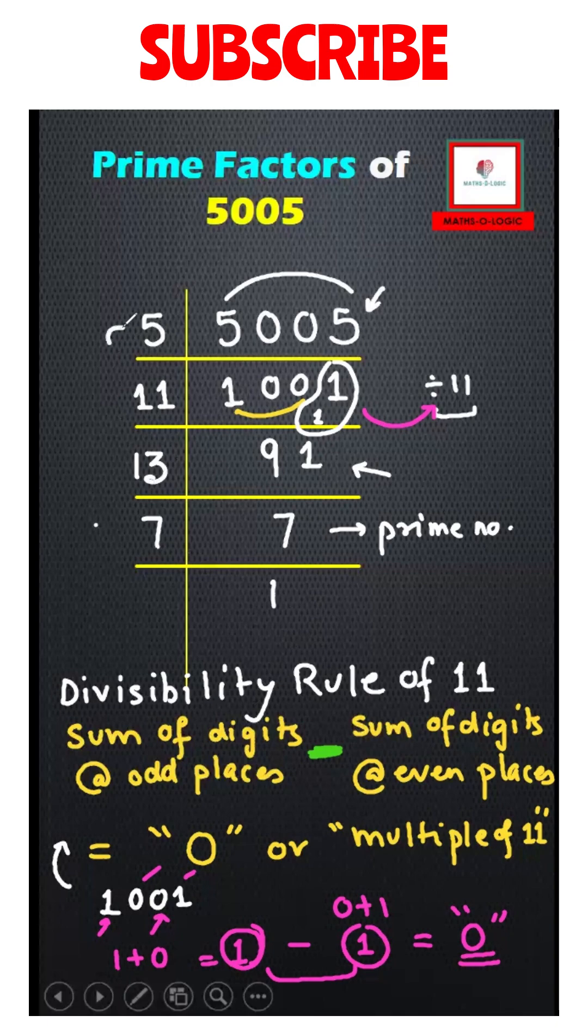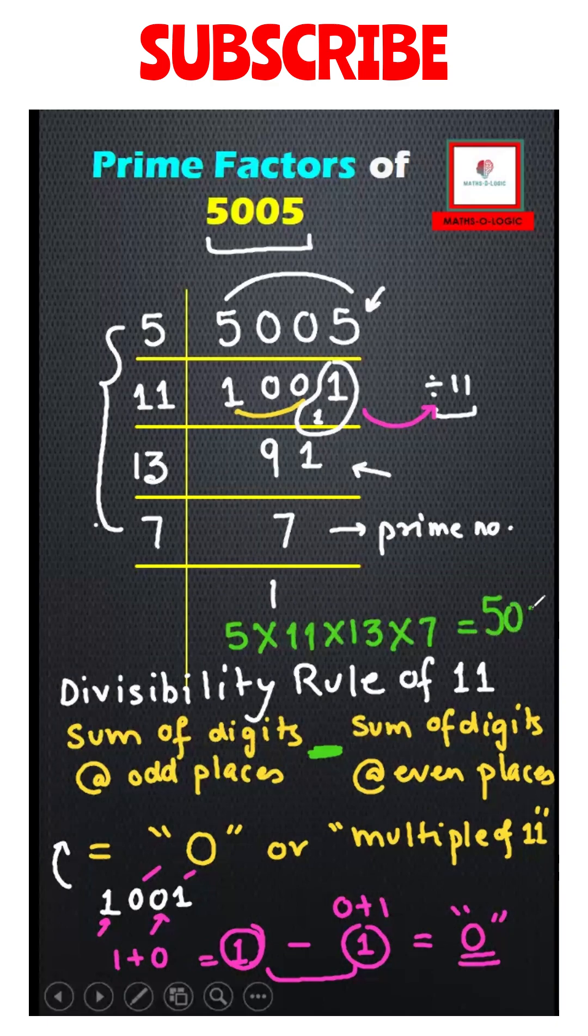Now I have got all the prime factors of 5005. I can sum it up here and write my answer. 5 × 11 × 13 × 7 = 5005. These are the prime factors.